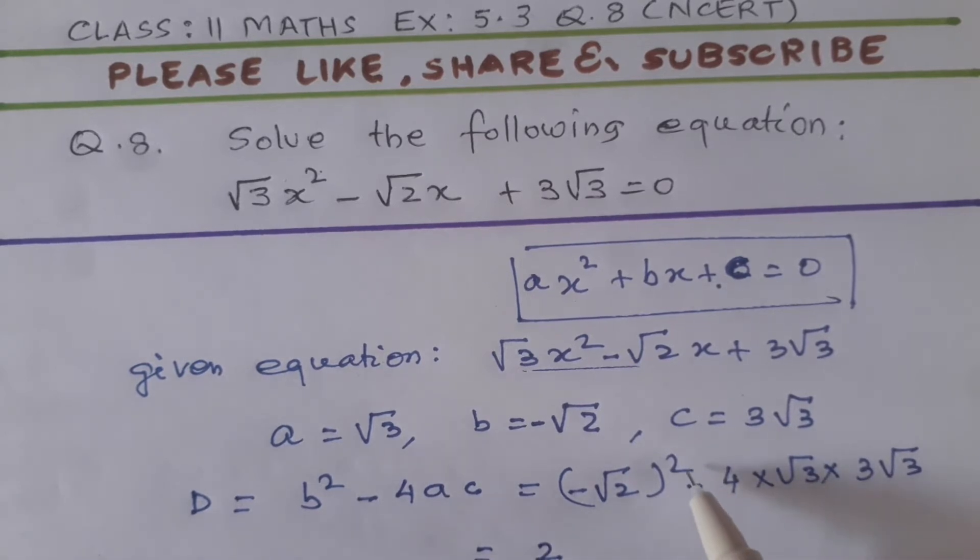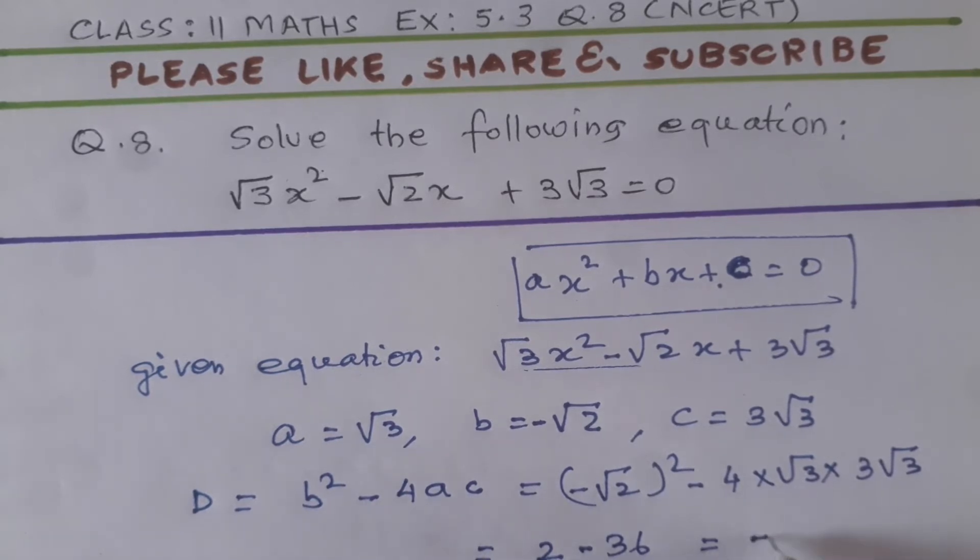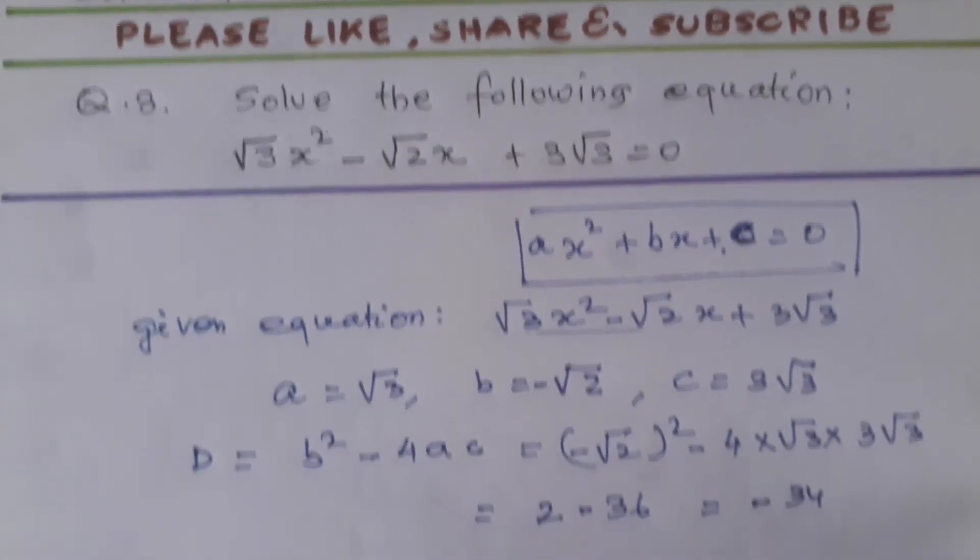And this will be 4 into 3, 12 and root 3 into root 3 is equal to 3, so 12 into 3 is equal to 36 and 2 minus 36 will be minus 34.